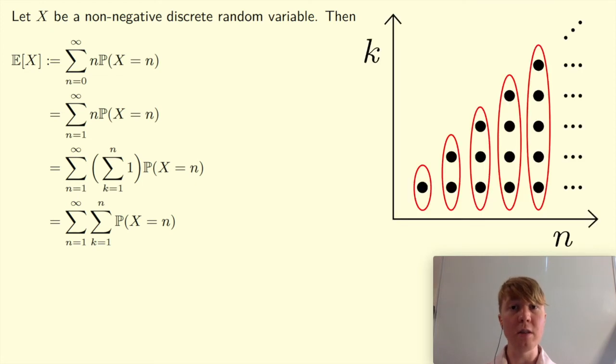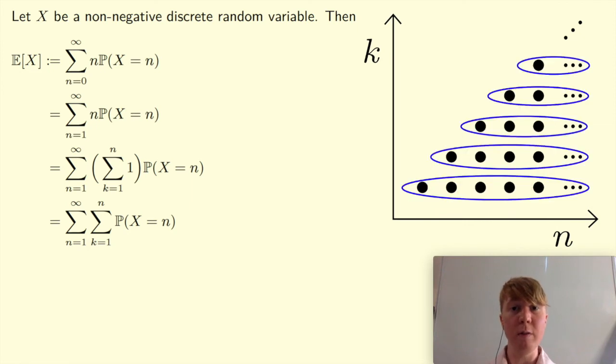I've got a little picture here, just to help visualize what's happening at the moment. So at the moment, we're fixing each value of n, and then for each fixed value of n, k goes between 1 and n. Then when we change the order of summation, what we're going to do is we're going to fix each value of k. You can see from the picture here that when you fix your value of k, n is going to go from k all the way up to infinity.